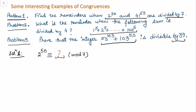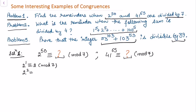For the first problem, we want to find what remainder results when 2 to the power 50 is divided by 7, and what 41 to the power 65 is congruent to modulo 7. Starting from the basics: 2 to the power 1 is congruent to 2 modulo 7 — correct, since 2 minus 2 is 0 and 7 divides 0. Then 2 to the power 2 is congruent to 4 modulo 7. Then 2 to the power 3, which is 8, is congruent to 1 modulo 7, because 8 minus 1 is 7 and 7 divides 7.